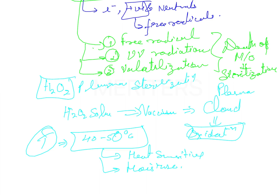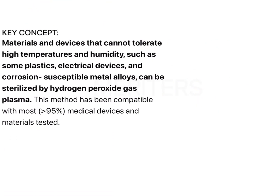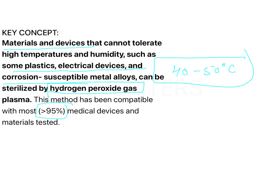The instruments are wrapped prior to sterilization and can then either be stored or used immediately — there is no problem with use after this process. The advantage of the plasma method is the possibility of achieving sterilization at a very low temperature of less than 50 degrees Celsius. Materials and devices that cannot tolerate high temperature and humidity — such as some plastics, electrical devices, and corrosion-susceptible metal alloys — can be sterilized by H2O2 gas plasma. The method is compatible with 95% of medical devices.